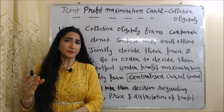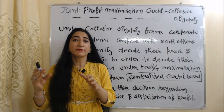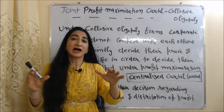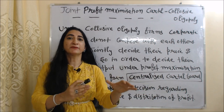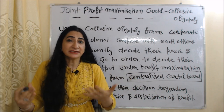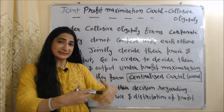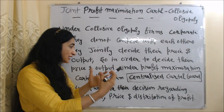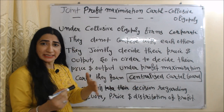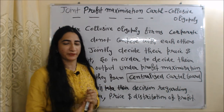What is joint profit maximization cartel? Under collusive oligopoly, firms cooperate — they don't compete with each other. They jointly decide their price and output. In order to jointly decide their price and output, they form a centralized cartel board, and this board will take decisions regarding output quota, price, and distribution of profit.